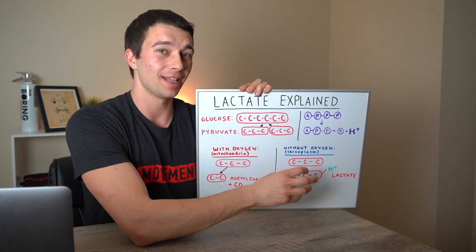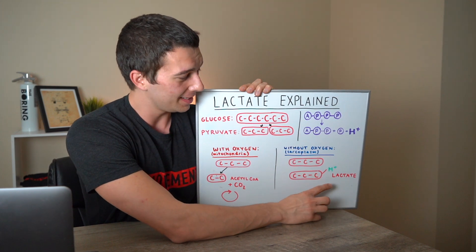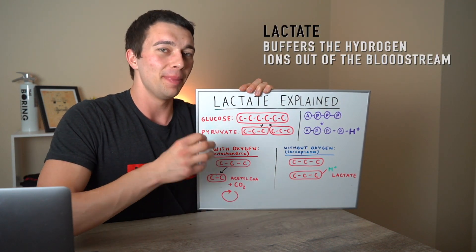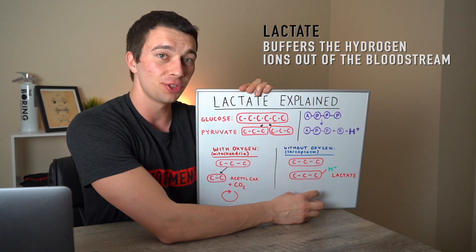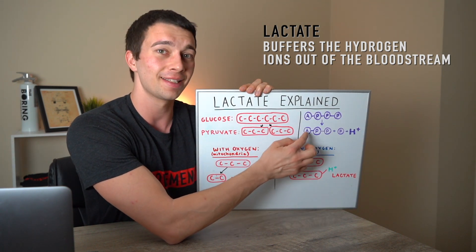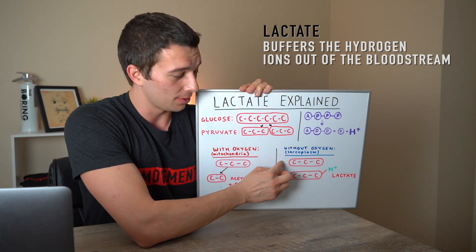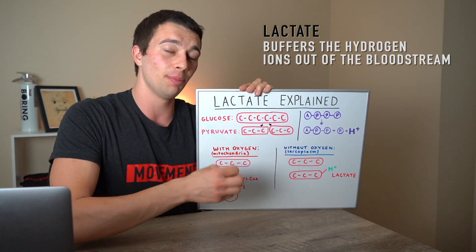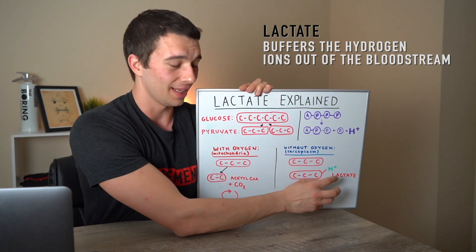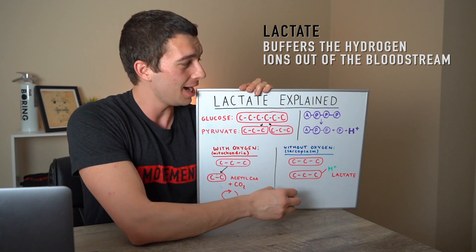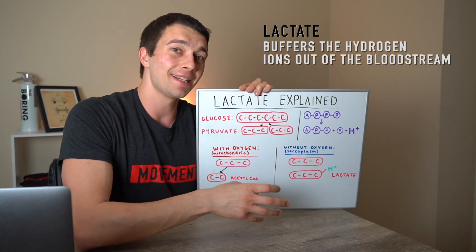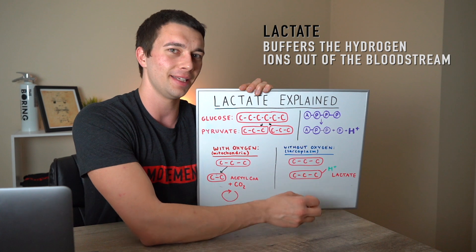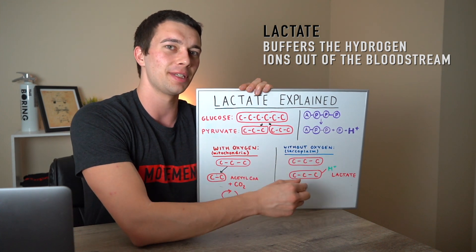Here's what lactate is actually doing: lactate is buffering the hydrogen ions out of the bloodstream. Those hydrogen ions were put into the bloodstream through ATP hydrolysis, and then pyruvate turning into lactate is actually taking hydrogen ions out of the bloodstream. Lactate is being produced at the same time as the hydrogen ions, but lactate is not producing hydrogen ions and is not making the blood acidic — it's just occurring at the same time.